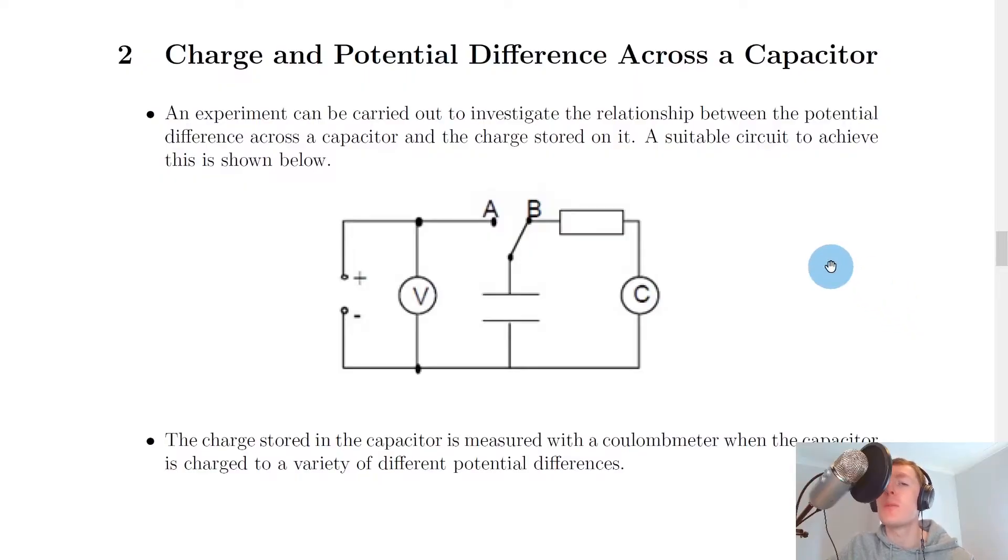Now we've already seen that charge will build up on the plates of a capacitor and due to the electric field created between the positively and negatively charged plates, a potential difference will also be produced. An experiment can be carried out to investigate the relationship between the potential difference across a capacitor and the charge stored on it. A suitable circuit to achieve this is shown below.